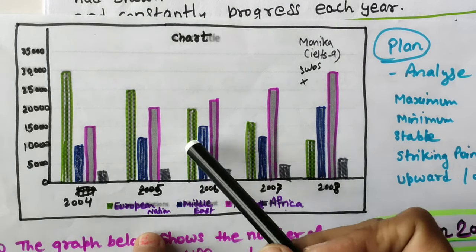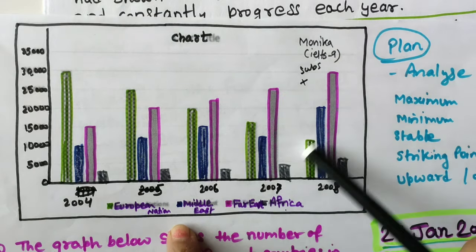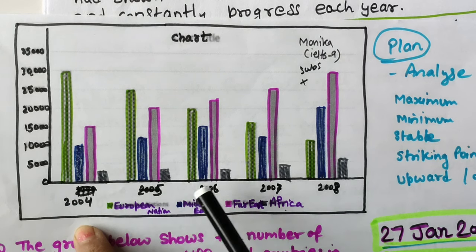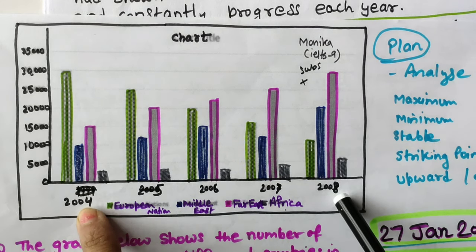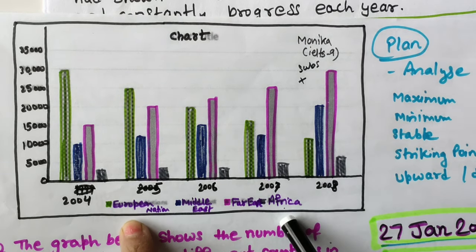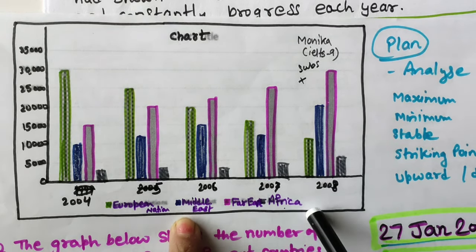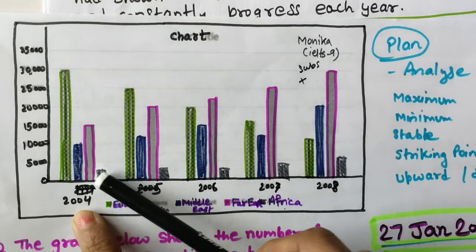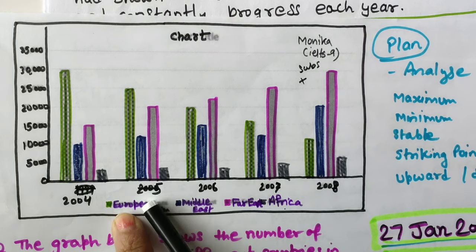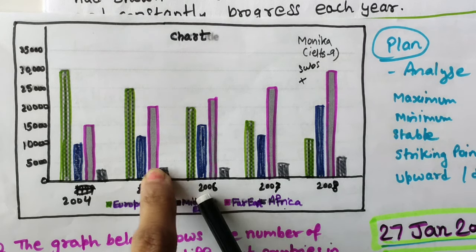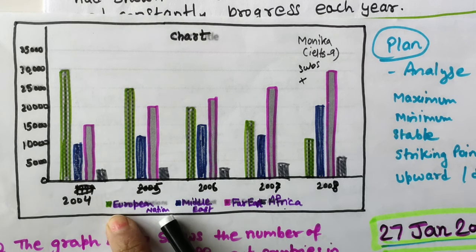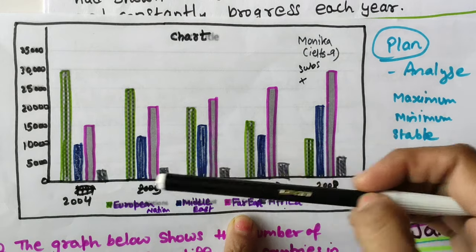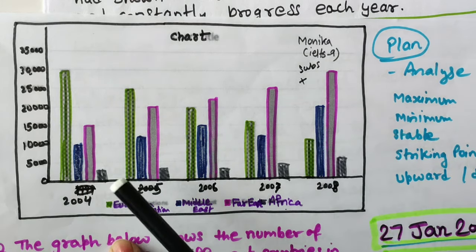Here I can see there are four years - from 2004 to 2008. There are four groups: European Nation, Middle East, Far East, and Africa. The y-axis goes from zero to 35,000. In the main exam you will not get any colorful graph, only black and white with some distinguishing signs. I have made it colorful here: green is European, blue is Middle East, purple is Far East, and gray is African students.